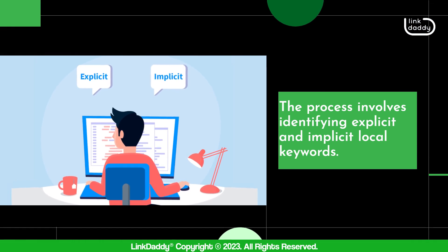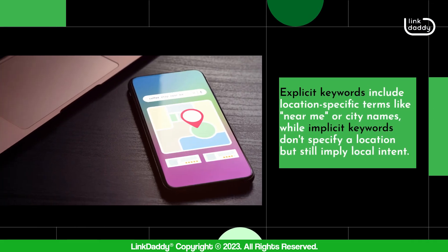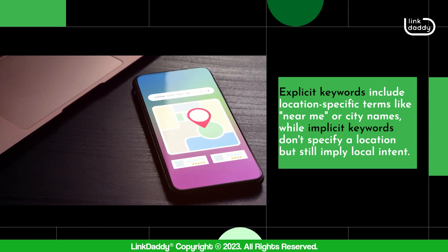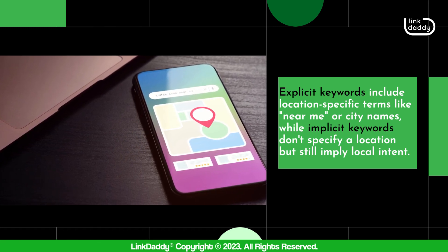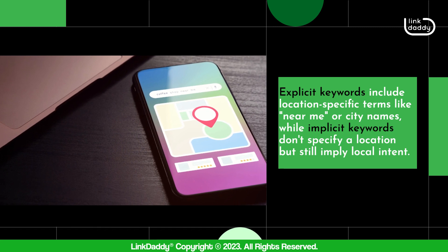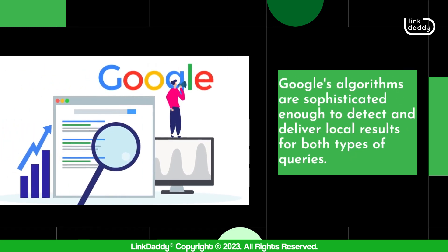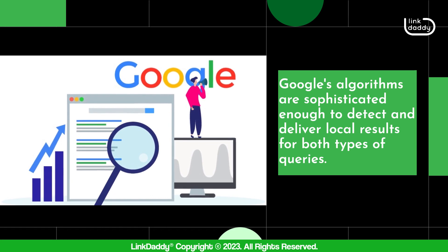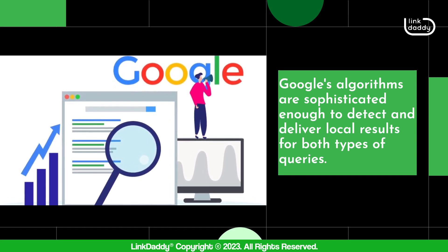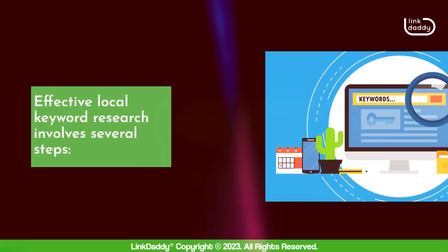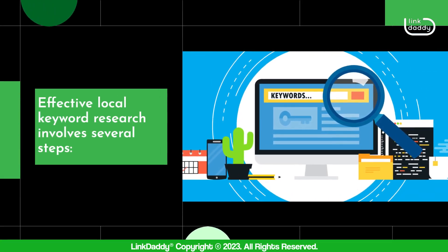The process involves identifying explicit and implicit local keywords. Explicit keywords include location-specific terms like 'near me' or city names, while implicit keywords don't specify a location but still imply local intent. Google's algorithms are sophisticated enough to detect and deliver local results for both types of queries. Effective local keyword research involves several steps.